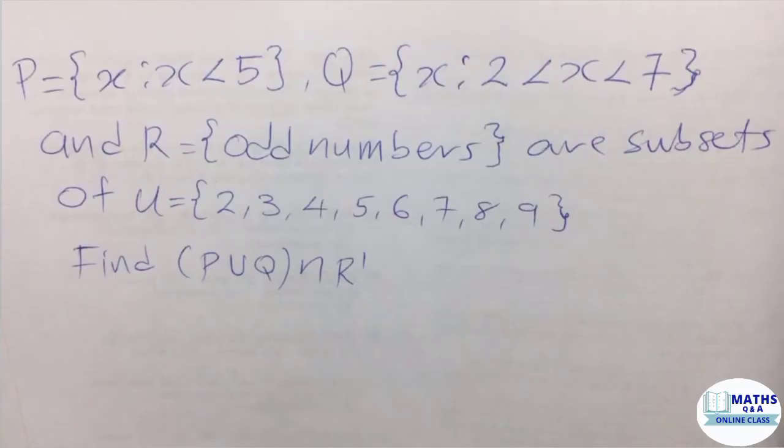The first thing that we have to do is to list the elements in each of the sets. That is set P, set Q, and then set R. Now, we cannot go beyond the universal set.